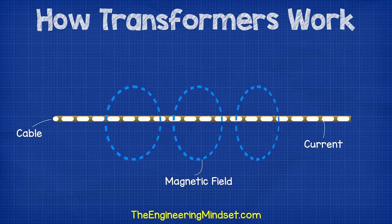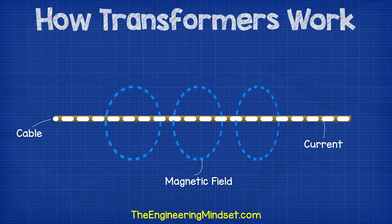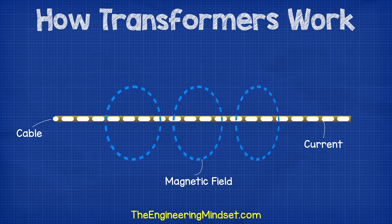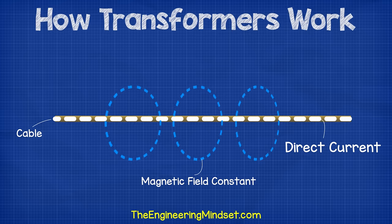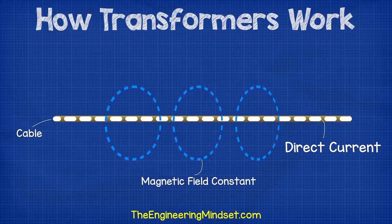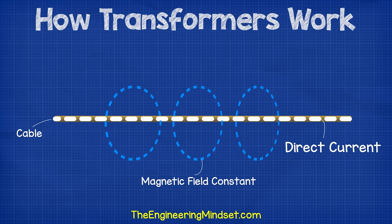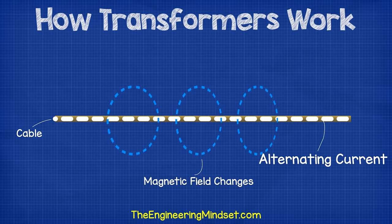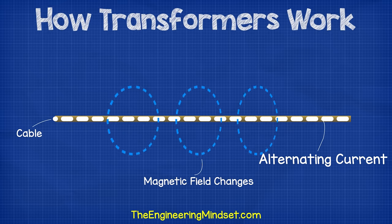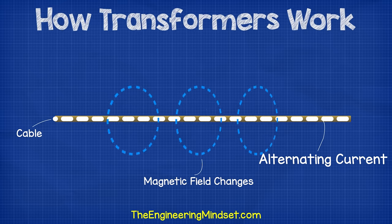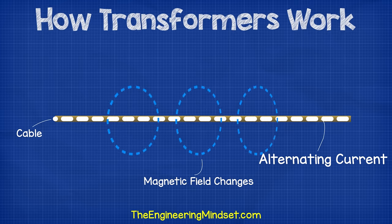As the current flows through the cable, it will emit a magnetic field. If we pass DC current through the cable, the magnetic field will remain constant, but if we pass AC current through the cable, then the magnetic field will increase and decrease in strength and change polarity as the current changes direction.